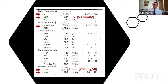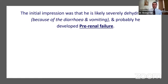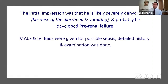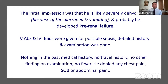I immediately ordered blood ketones — they were normal. Not DKA. The next thought was that he'd been vomiting and had diarrhea for two days, looked dry — possibly severe dehydration causing pre-renal failure. I started IV fluids and gave antibiotics in case of sepsis, since things were unclear. I then took a detailed history and performed a thorough examination.